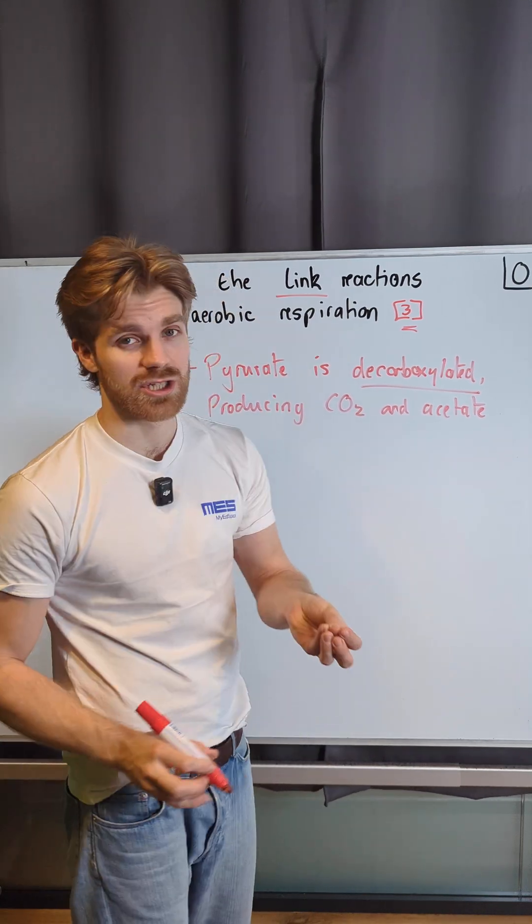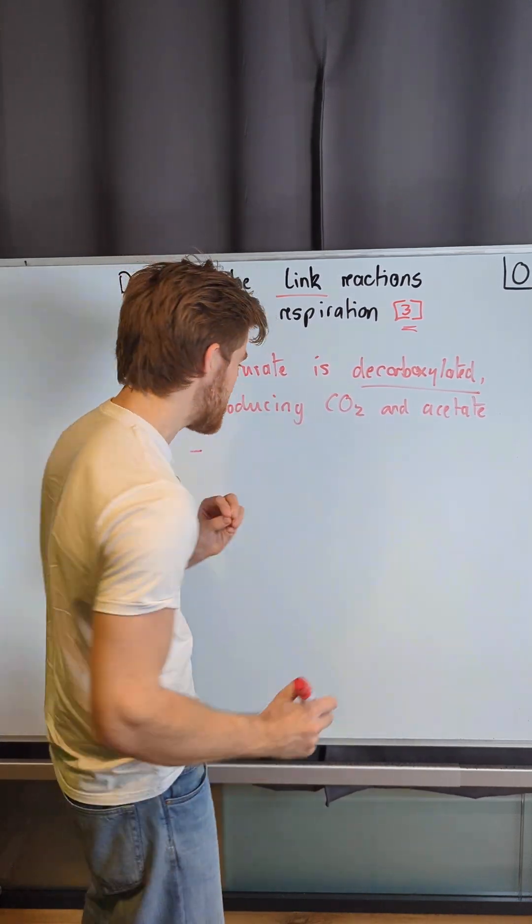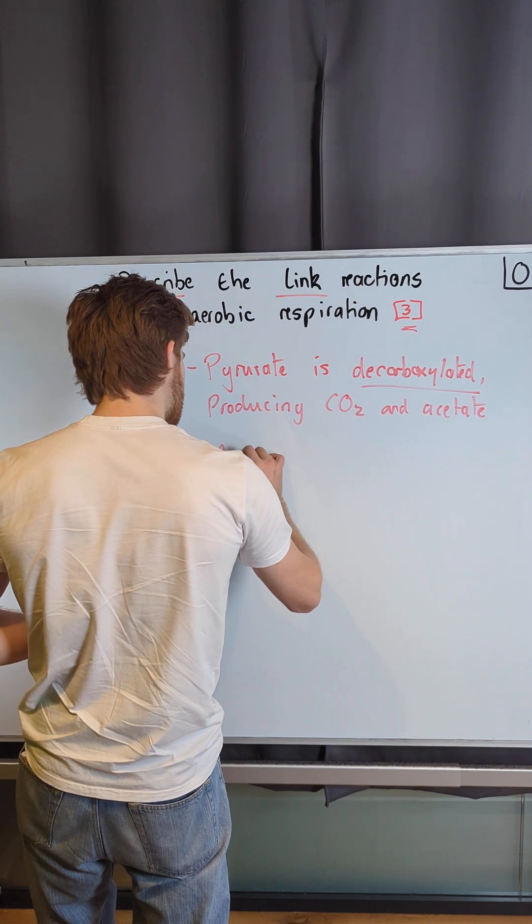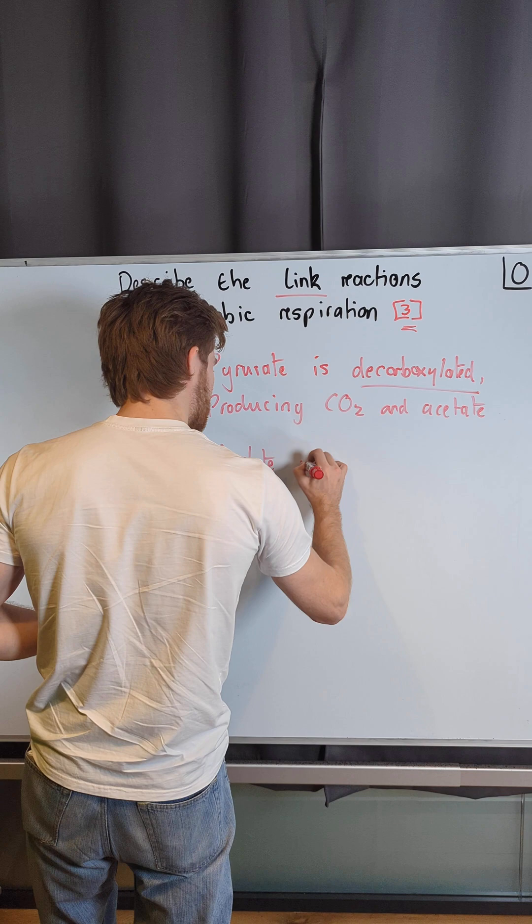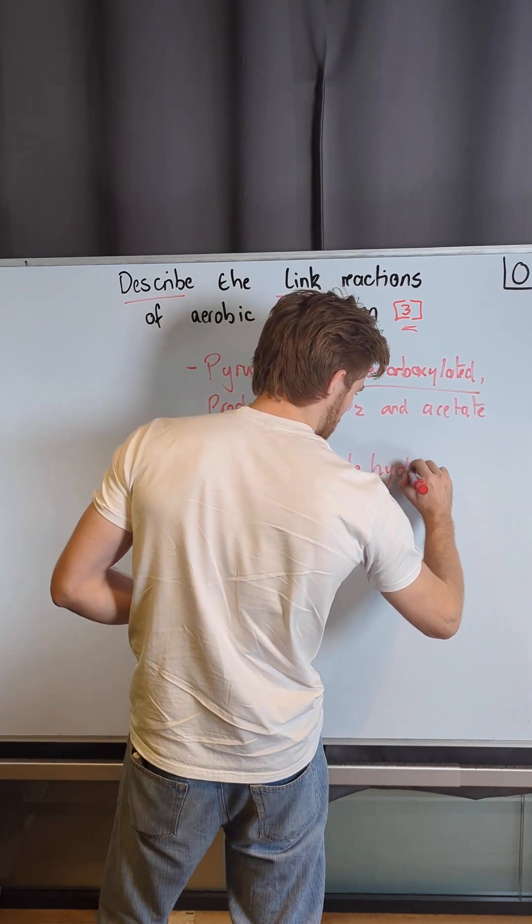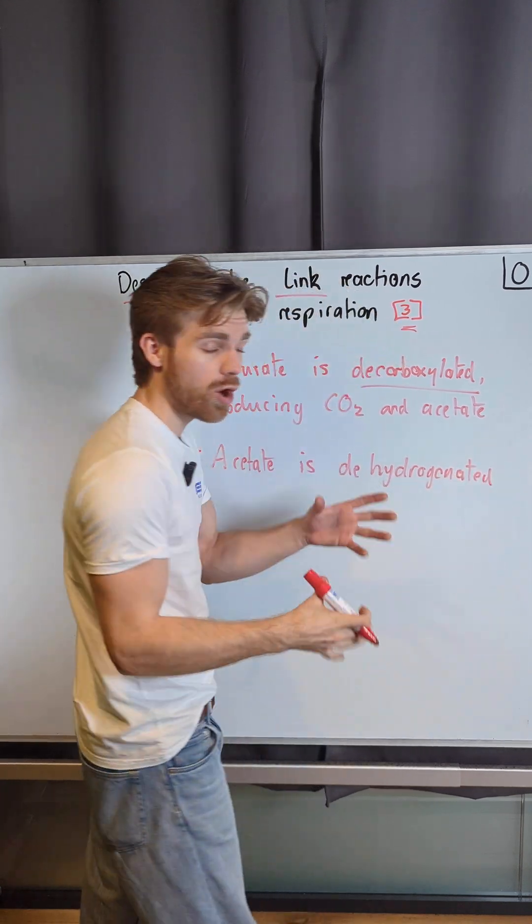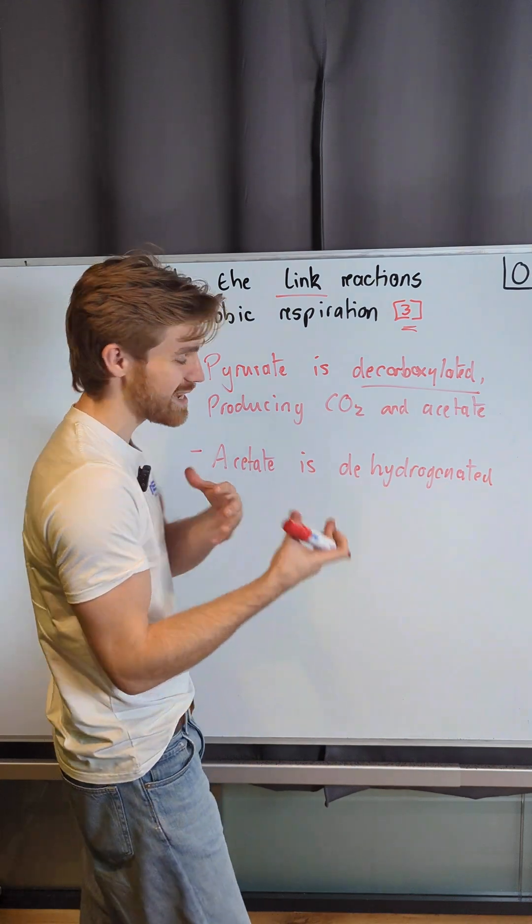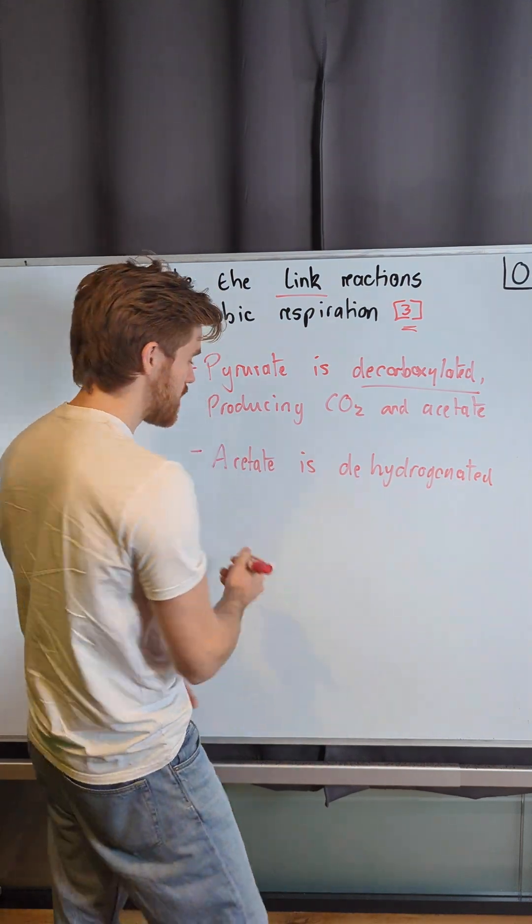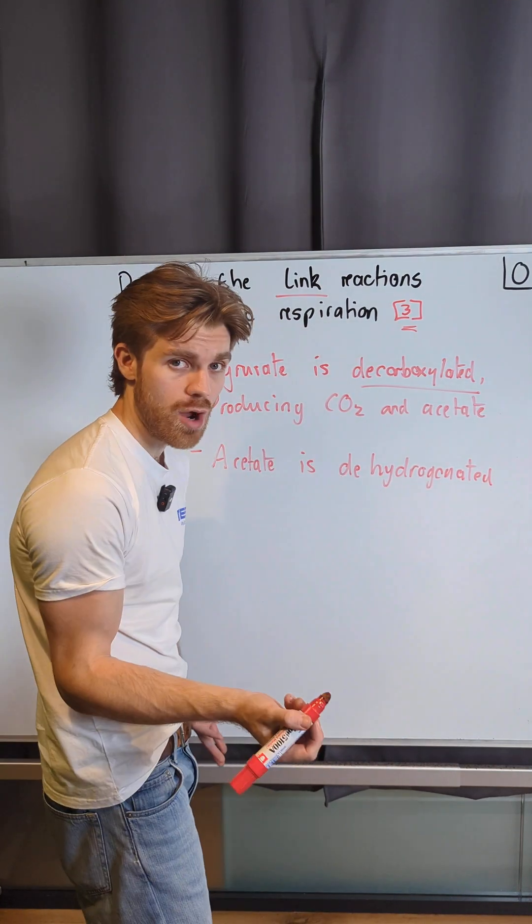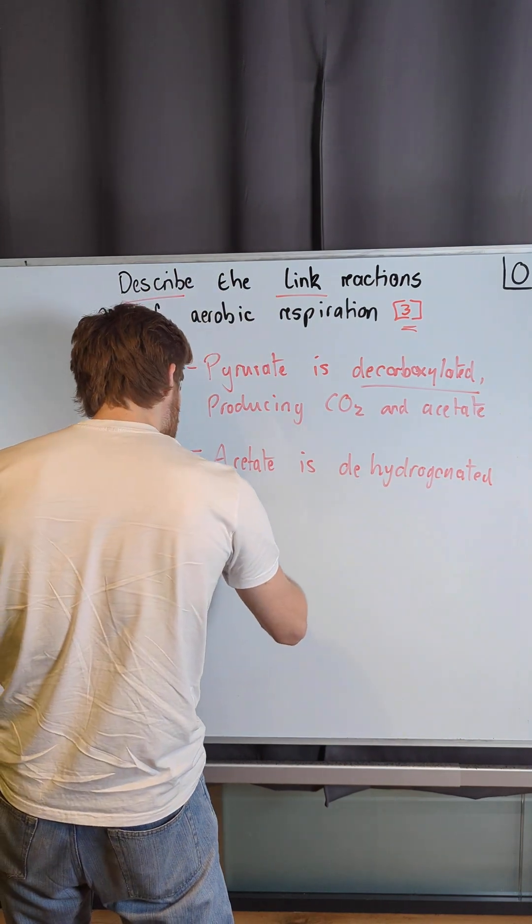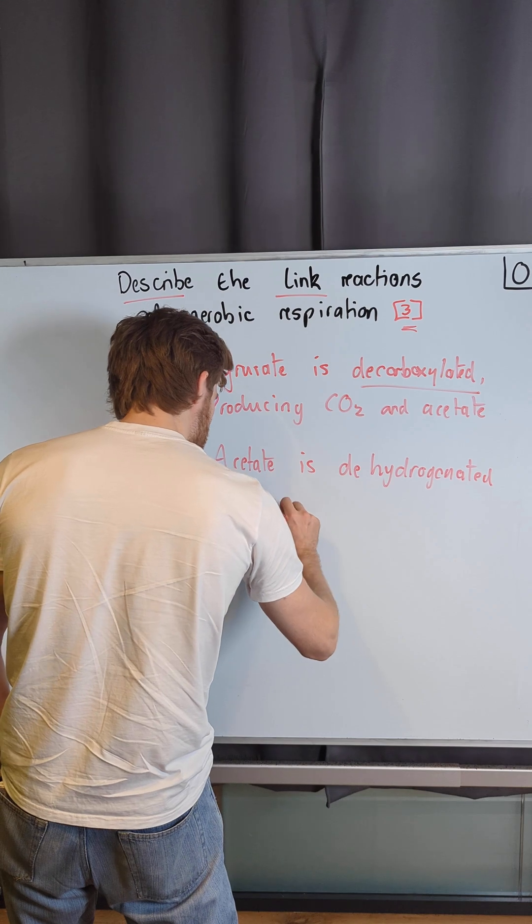The other type of reaction is a dehydrogenation reaction. So the acetate is dehydrogenated. This is also an oxidation reaction because the acetate is losing the hydrogen and the electrons. This means that a reduced coenzyme NAD, so NADH, is produced.